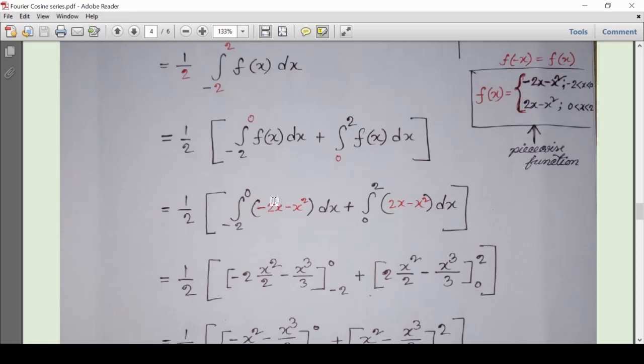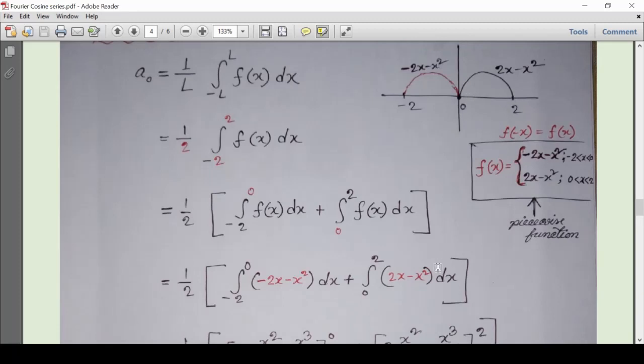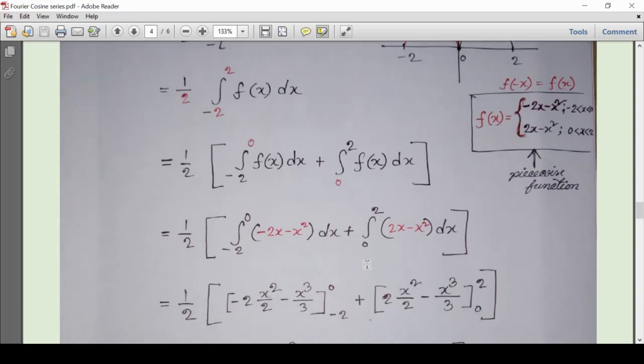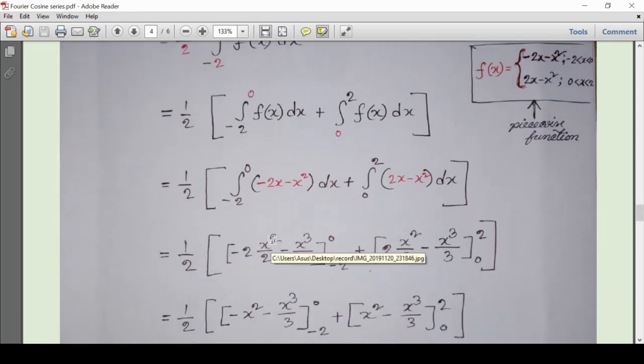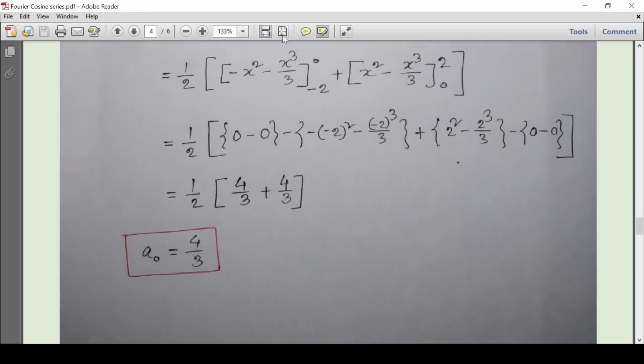From minus 2 to 0, the function is -2x - x² (you can see from the red colored curve), and from 0 to 2, the function is 2x - x². Then by integrating, we have the result of a_0 that is equal to 4/3.